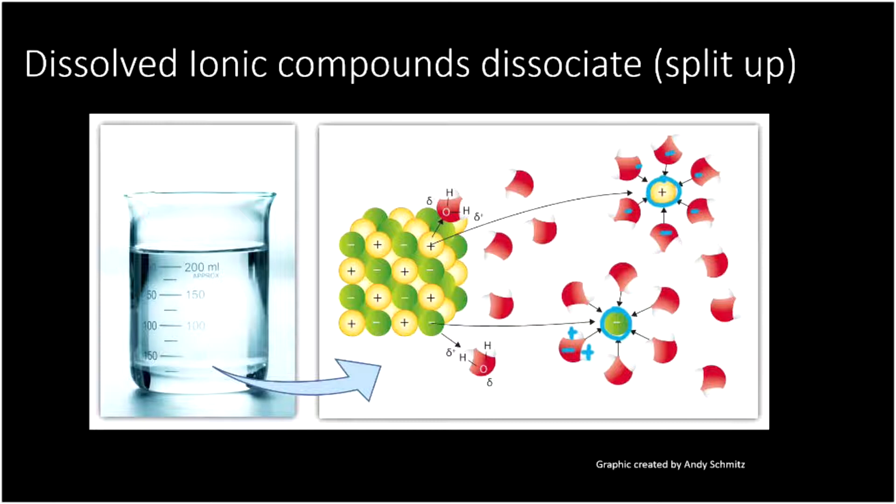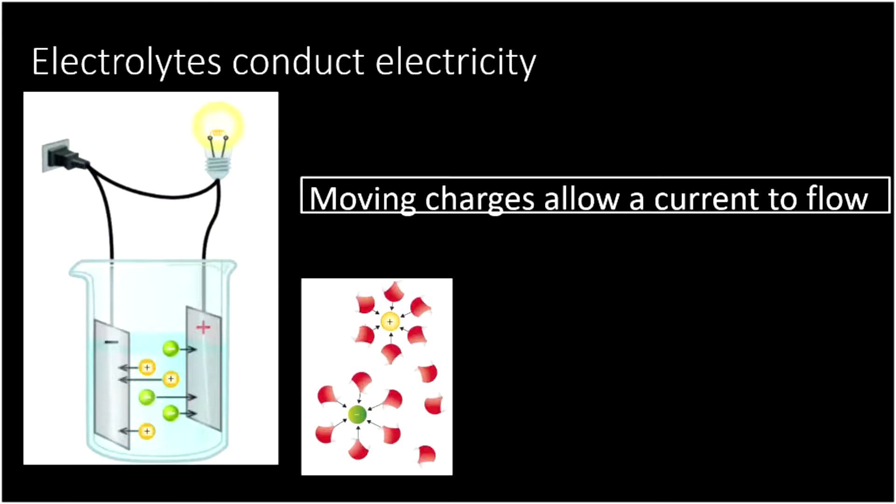And they're electrolytes. How do they conduct electricity? Because that's what it means to be an electrolyte. Electrolytes conduct electricity, just like we said in the case of the neuron. How does that work?